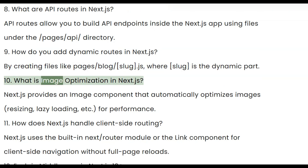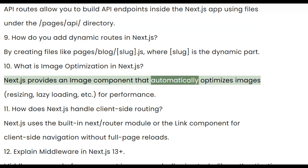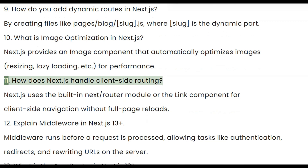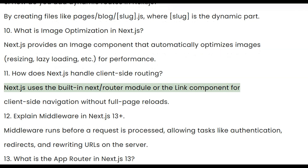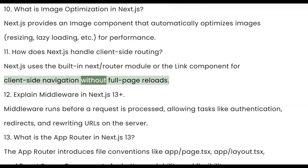Ten, what is image optimization in Next.js? Next.js provides an Image component that automatically optimizes images for performance. Eleven, how does Next.js handle client-side routing? Next.js uses the built-in Next router module or the Link component for client-side navigation without full page reloads.